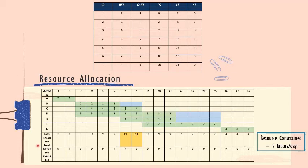We then calculate the total resources per day. For day 1 it is 3 laborers, day 2 also 3, and so on until day 18. However, for days 7 and 8, the total resources reach 11, which exceeds our resource constraint of 9 laborers per day. So we need to reduce the labor count for days 7 and 8 to no more than 9.